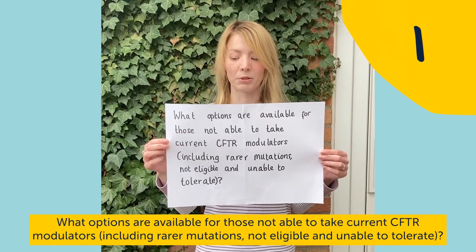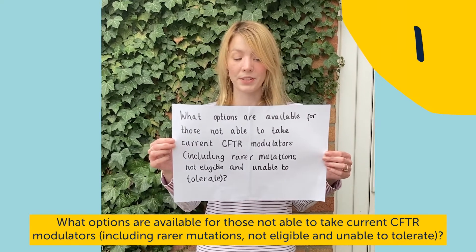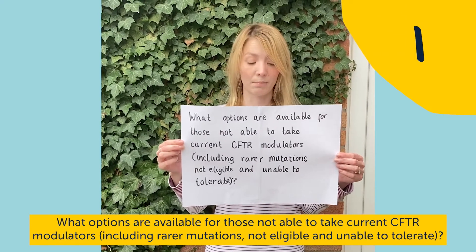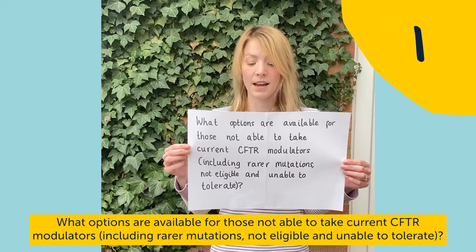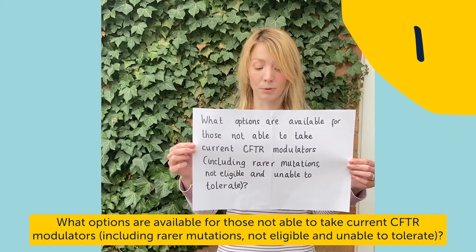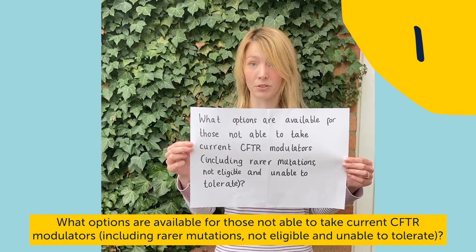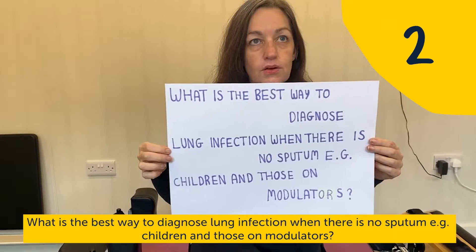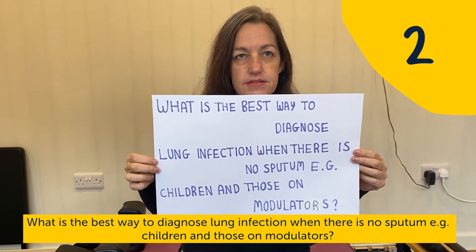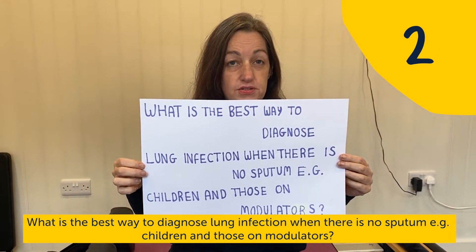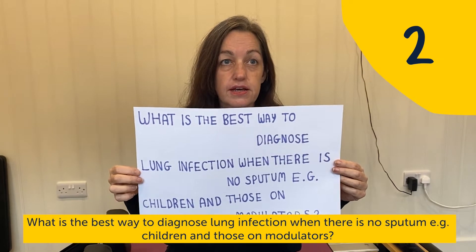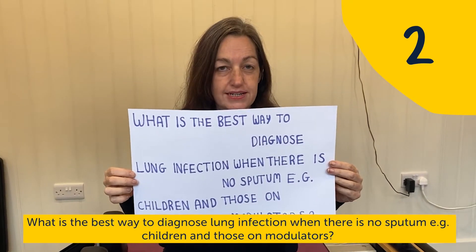What options are available for those not able to take current CFTR modulators, including rare mutations not eligible and unable to tolerate? What is the best way to diagnose lung infection when there is no sputum, for example in children and those on modulators?